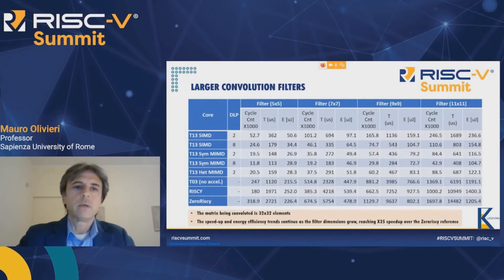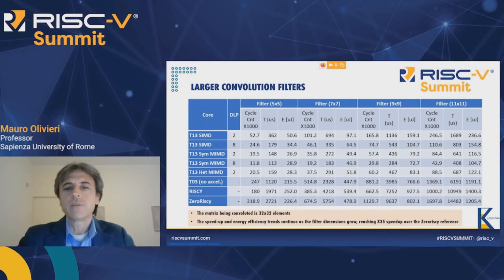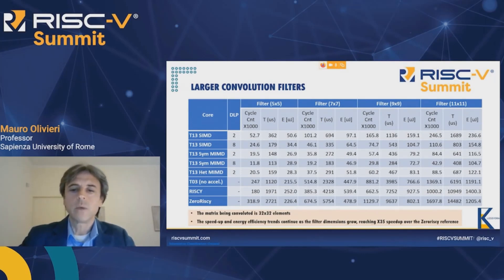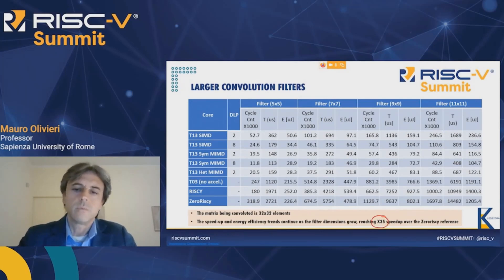A quick look at larger convolution filters: as may be expected, for larger filter sizes the vector acceleration is more and more effective, and we can reach up to 35 times the speedup over the Zero-Risky core.